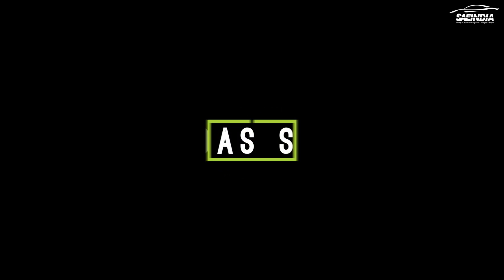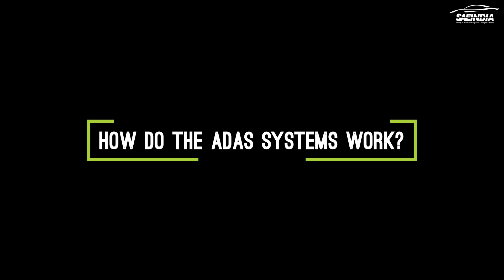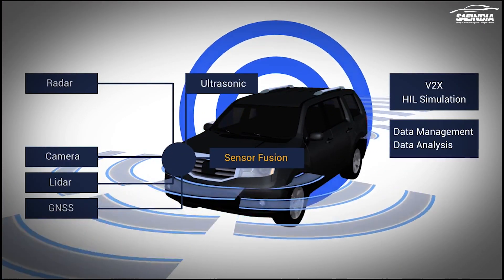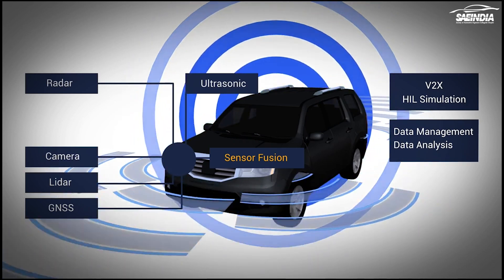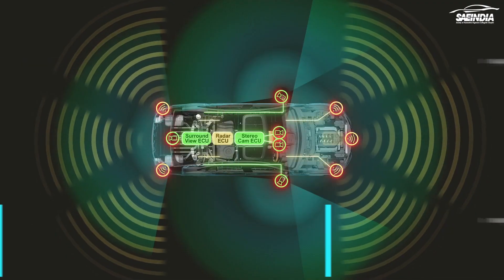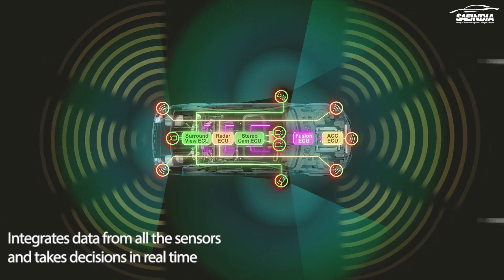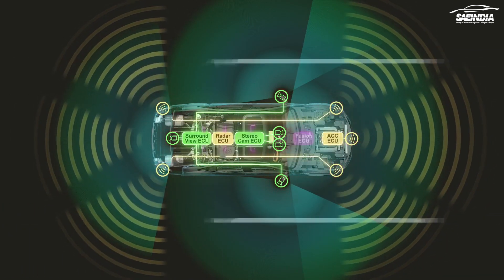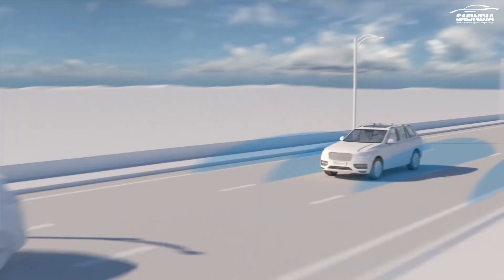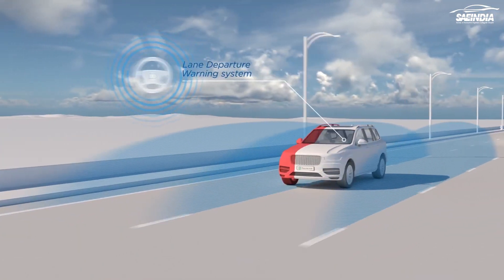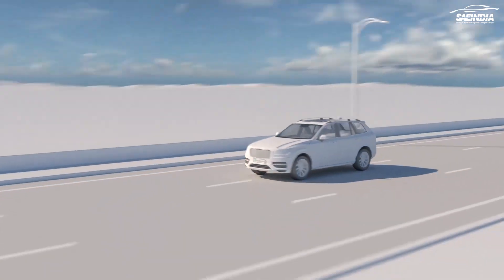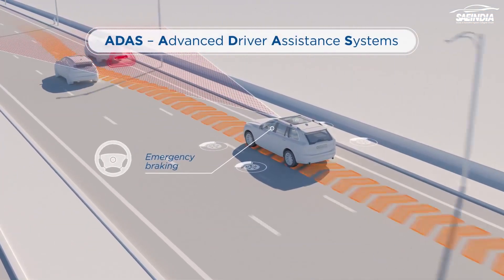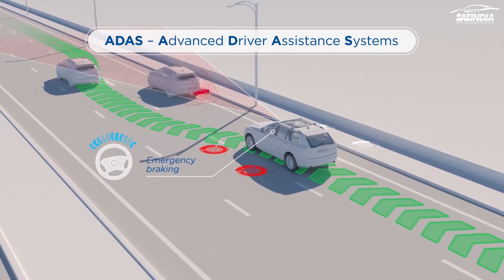How do the ADAS systems work? The ADAS system architecture consists of a suite of sensors, interfaces, and a powerful computer processor that integrates all the data and makes decisions in real time. These sensors are constantly examining the environment around the vehicle and perceiving data from surroundings, processing this information quickly and accurately in a computer system, and then either providing output information to alert the driver or taking action autonomously when necessary.